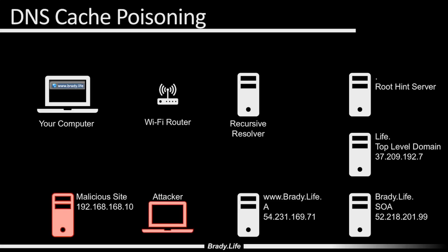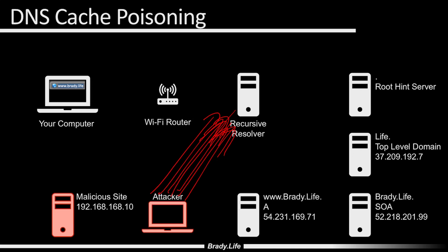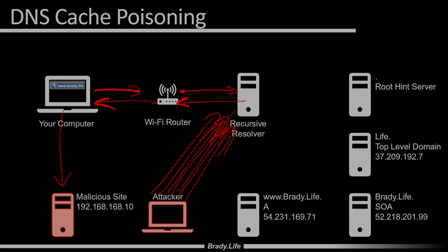If we're the attacker, we don't want this to be a fair race. We can give ourselves the advantage by asking the question ourselves — who is www.brady.life? — and then flood the recursive resolver with responses. If we have enough responses, we're going to guess the ID correctly and poison the cache, so that when your computer asks who is brady.life, it gets forwarded to the router, forwarded to the recursive resolver, which already has the answer cached and instantly responds — and now your computer is going to go to the malicious site instead of the legitimate site.